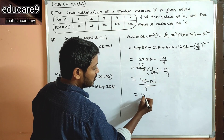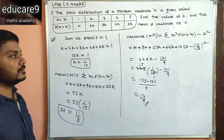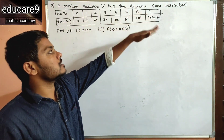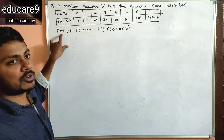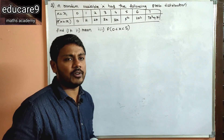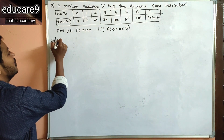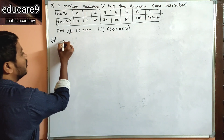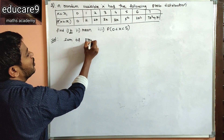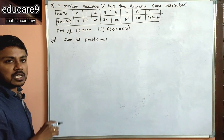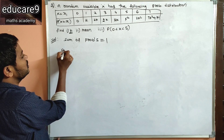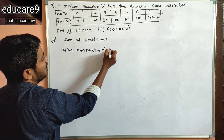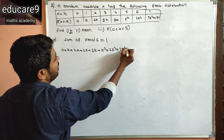That is the variance. Now the second problem — also very important. A random variable X has the following probability distribution. Find K, the mean, and P(0 < X < 5). For finding the value of K, we use the sum of probabilities equals 1. Adding all probability values: 0 + K + 2K + 2K + 3K + K² + 2K² + 7K² + K equals 1.